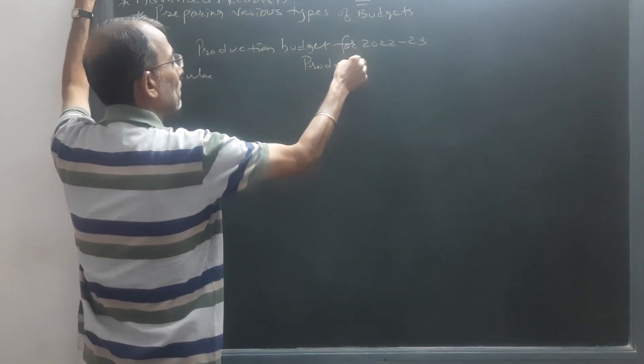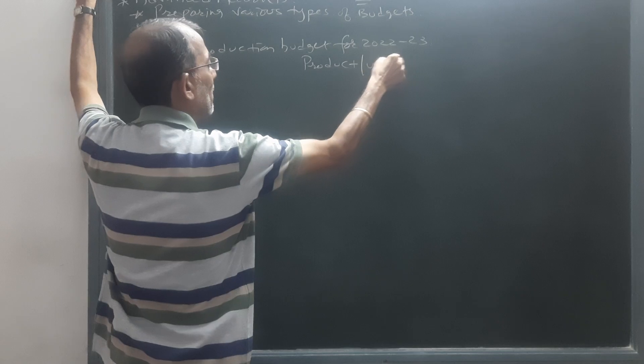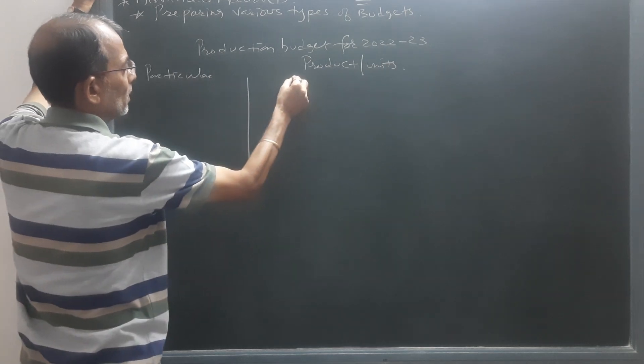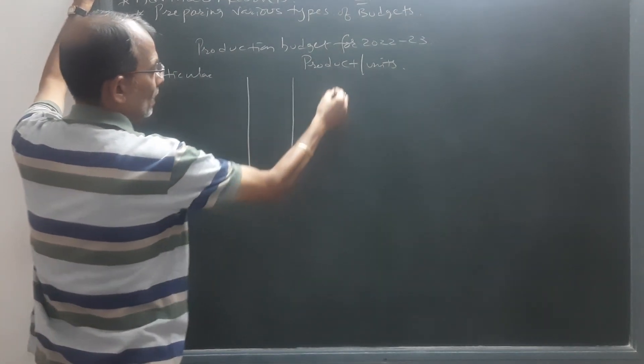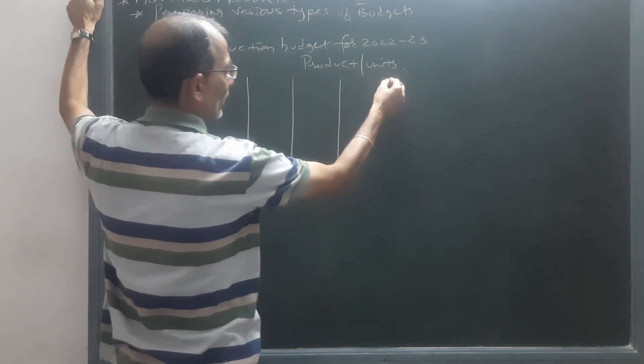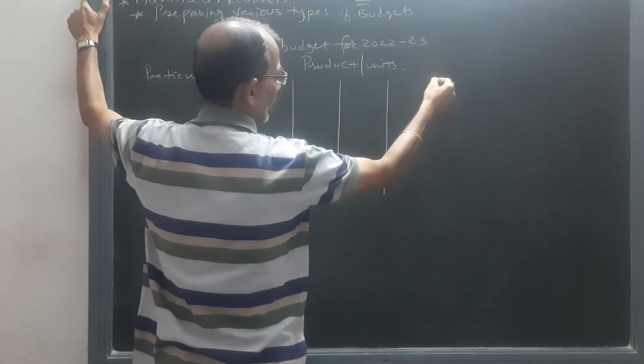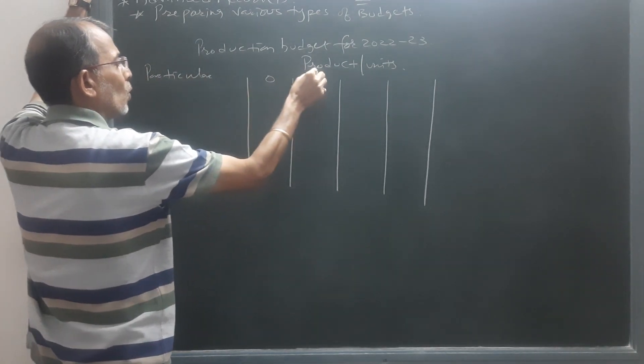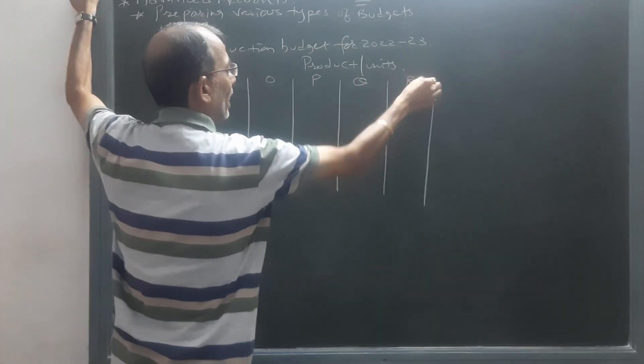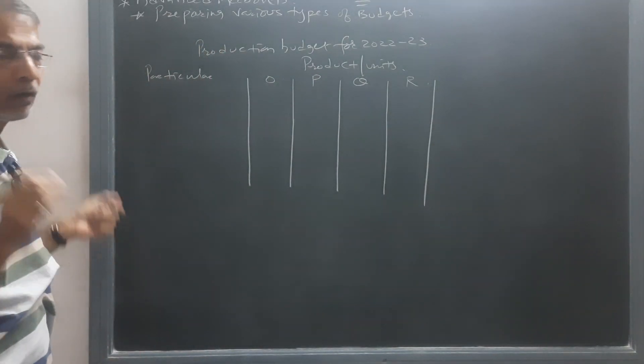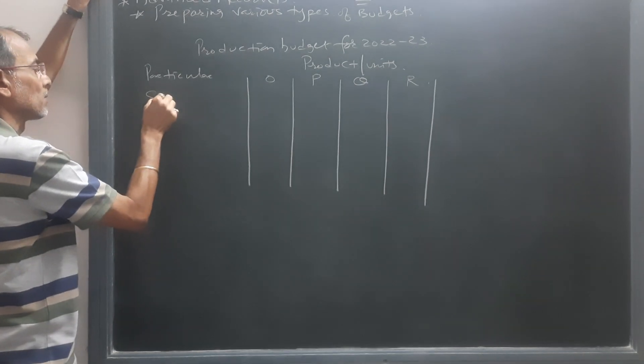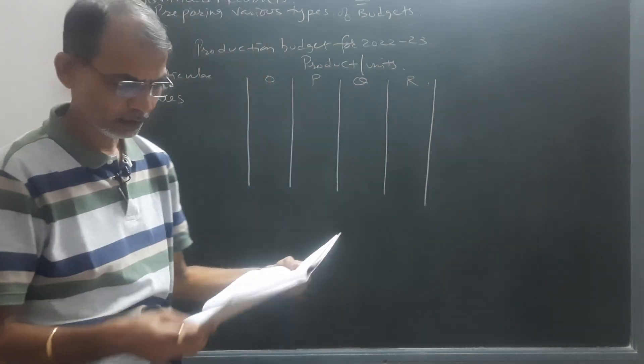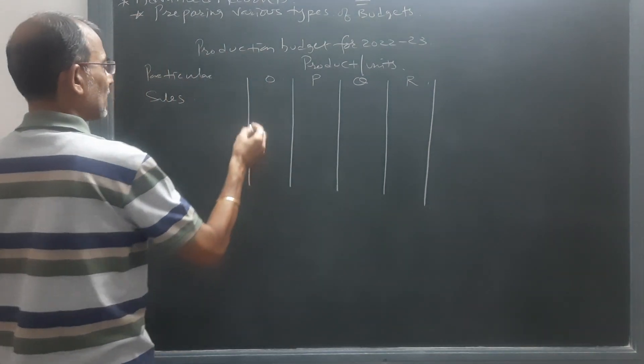Now, particulars. Here will come product. There are four products, so we need to prepare four columns. First product is O, P, Q, R. Now first of all we will take sales of each product, and that is 8 lakh, 9 lakh, 7 lakh, and 6 lakh.